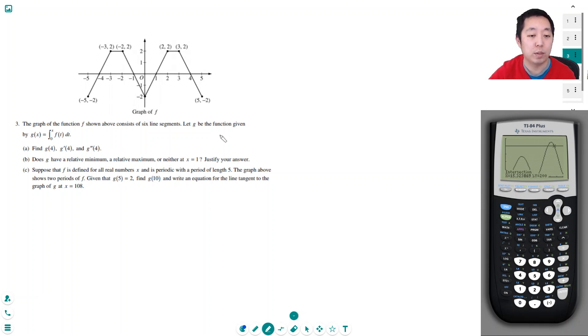So g of 4 by definition is the integral from 0 to 4 of f(t) dt, just plugging in here. The integral from 0 to 4 of f(t) dt is the area of f between 0 to here. I want to look at this area and this area separately and break out these two areas.